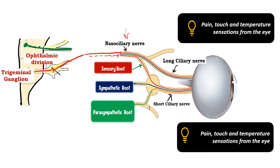Both the long ciliary nerve and the short ciliary nerve carry pain, touch, and temperature sensation from the eye — from the cornea, iris, and ciliary body. That is the reason why the eye is very sensitive to all these sensations, and why conditions such as keratitis, uveitis, and iritis cause a lot of pain. Both the long and short ciliary nerves carry all sensation to the trigeminal ganglia. Importantly, there is no relay of sensory fibers within the ciliary ganglion.